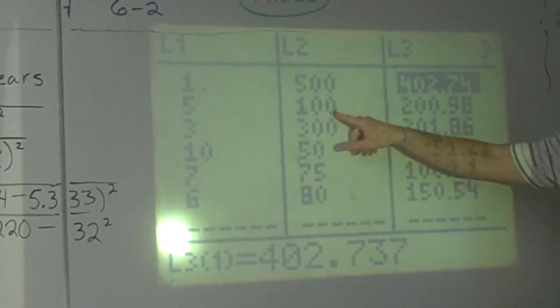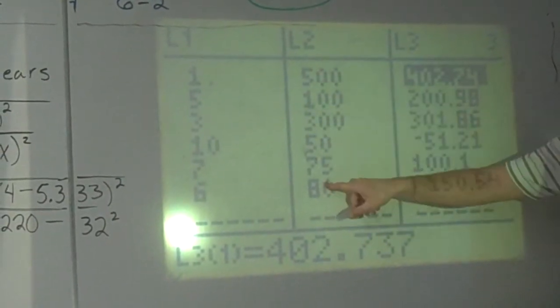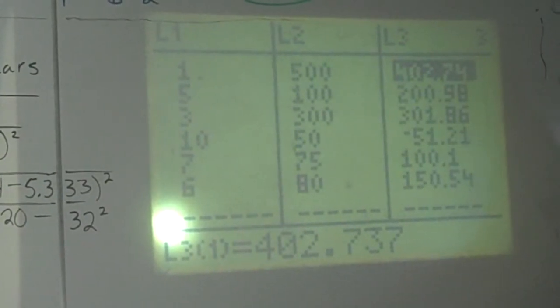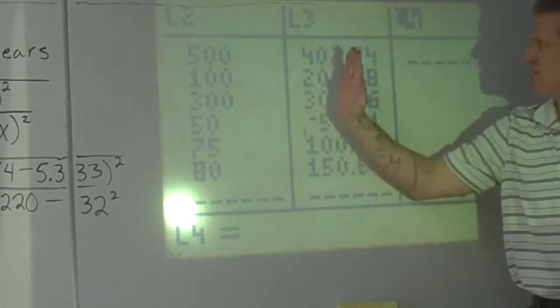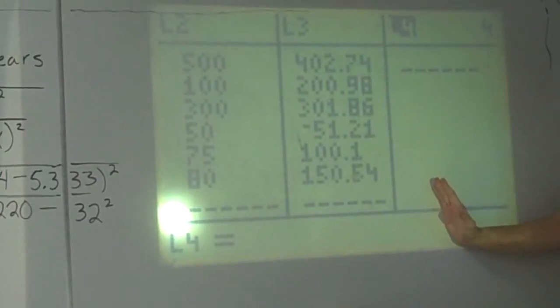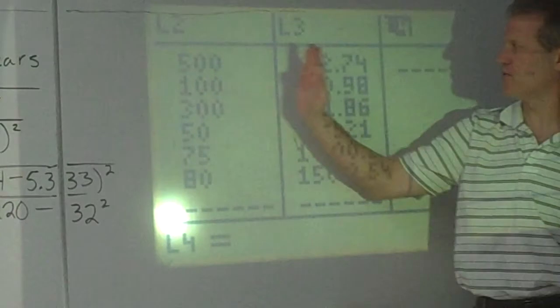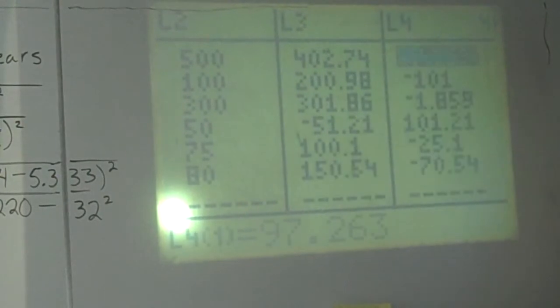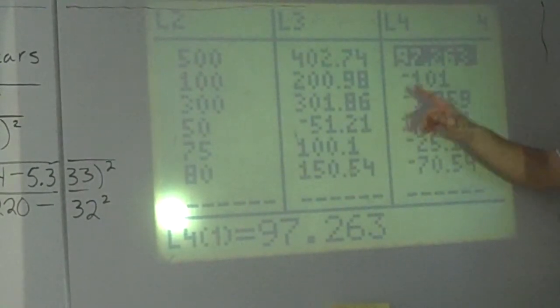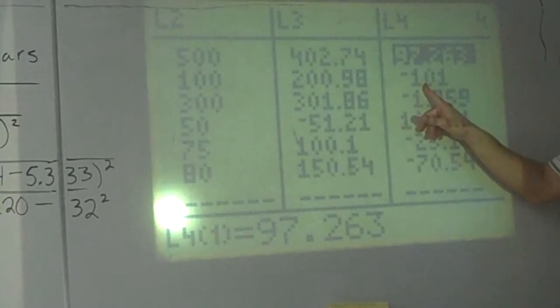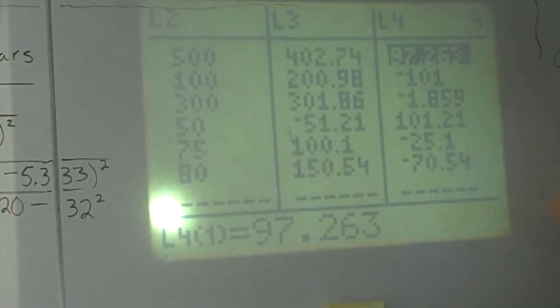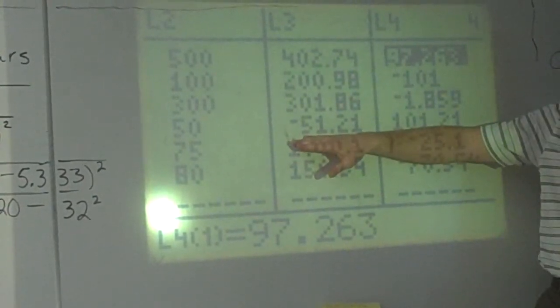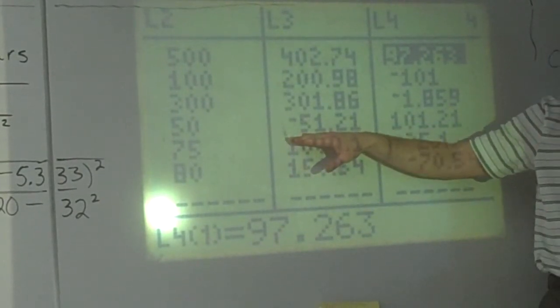Next, we want to find the difference between these two. We want to take our y values minus our y primes. Y primes are your predicted values and subtract them. So you go over to L4, you take list two minus list three to get all those, they're called residuals. The difference between the actual y value and the predicted y value is called the residual. So I go second two minus second three. So that's just the difference between these, like 100 minus 200.98, negative 101.